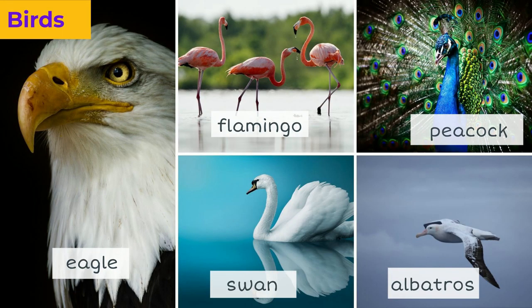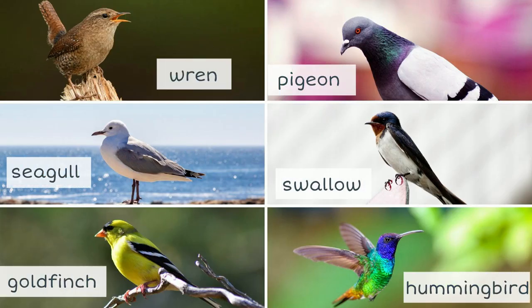Let's take a look at birds. An eagle, a flamingo, a peacock, a swan, an albatross, a wren, a seagull, a goldfinch, a pigeon, a swallow, a hummingbird — which is the smallest bird in the world.